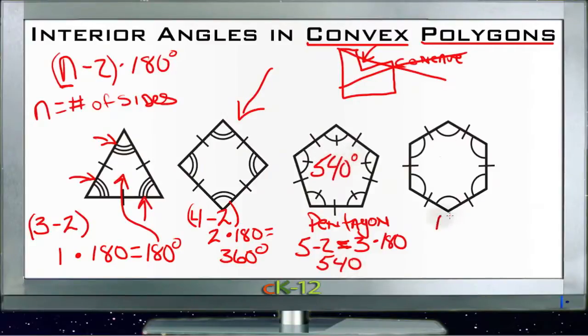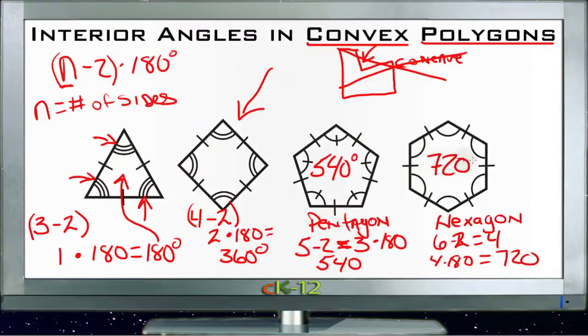And then a hexagon, hexagon is six sides, so we have six minus four, or six minus two I mean, which is four. And four times 180 is 720. So a hexagon has 720 degrees on its internal measurements.